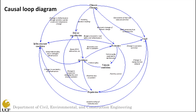The next loop is: accident rate → economy → vehicle safety → accident rate. Increasing the crash rates will have a negative impact on the economy, which according to the literature can impact GDP by up to 2%. This reduction will leave less money for vehicle safety improvements, which will result in reductions in vehicle safety and will increase the number or severity of future accidents.